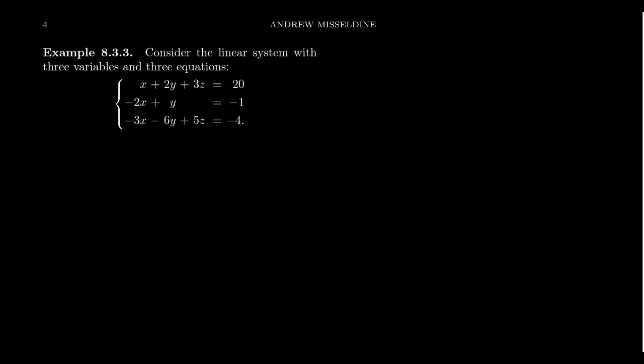What if we want to consider a system of equations with three variables? For geometric purposes we're going to call them x, y, and z, although for our applied linear algebra course we would typically call this x1, x2, and x3. When you graph one of these equations it would give you a plane — a linear flat object in three-dimensional space. We're then looking for the intersection of the planes.